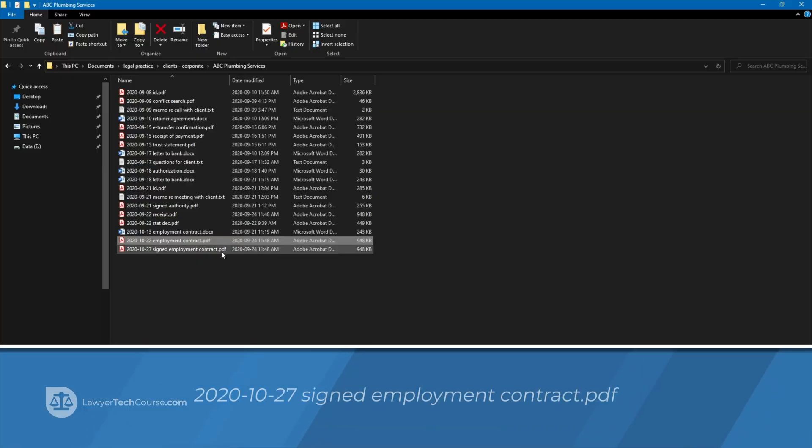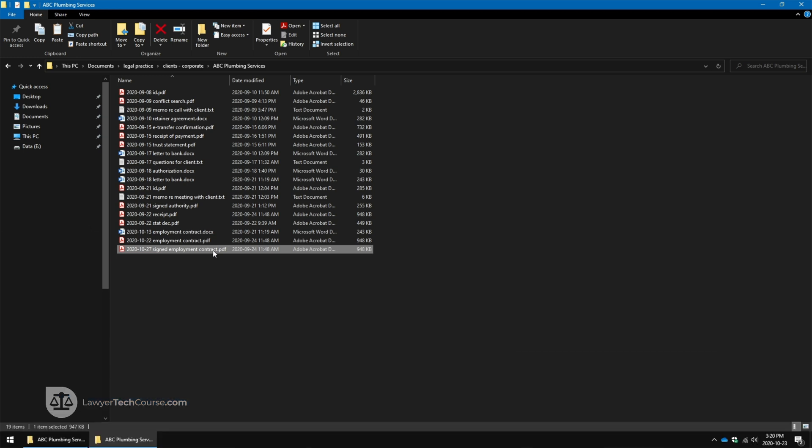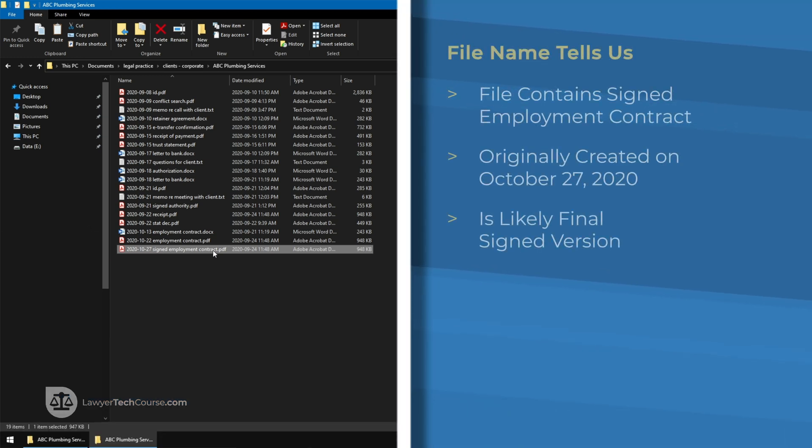If I want to determine if it is the final draft, I'll need to dig deeper. For example, I see a file entitled 2020-10-27 signed employment contract, which suggests to me that this file is a final version that was signed five days after the original version was made. To confirm, I need to open the file and see what it contains.